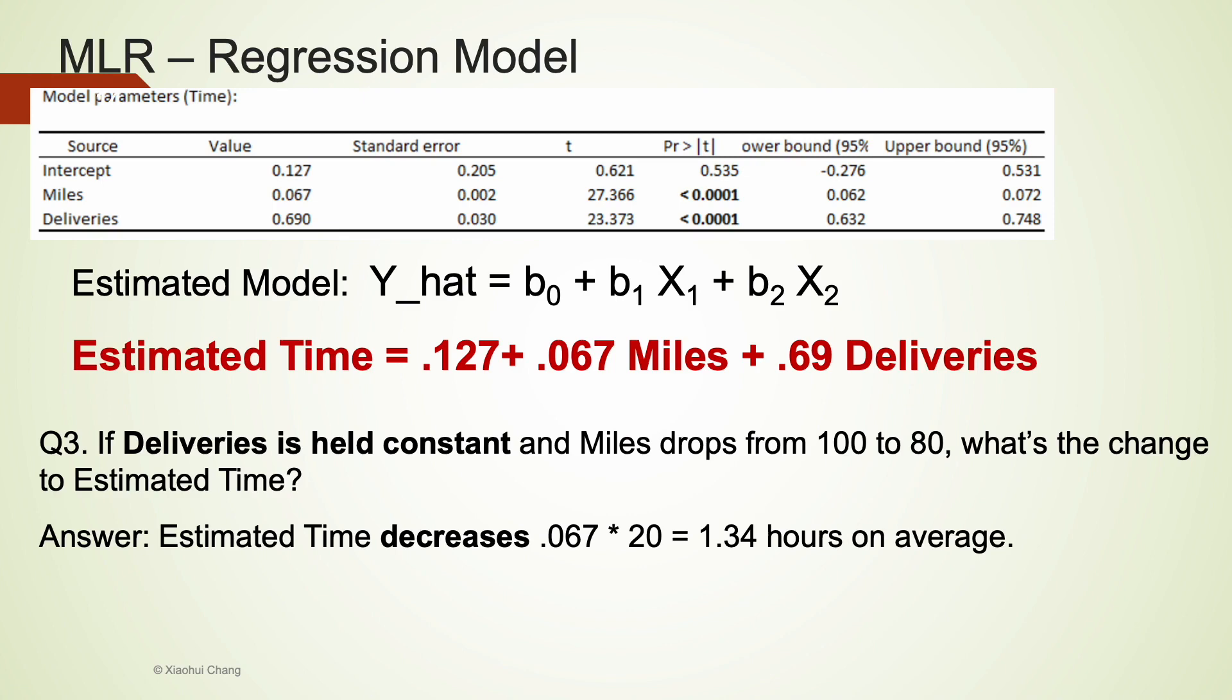I keep on using the phrase on average because this effect on time is only an estimated effect using a linear regression model. We try to fit a bunch of points using one straight line. Not all points will lie perfectly on this line. Some of them will be above this estimated line and some will be under this line. But on average, they should be around this line.